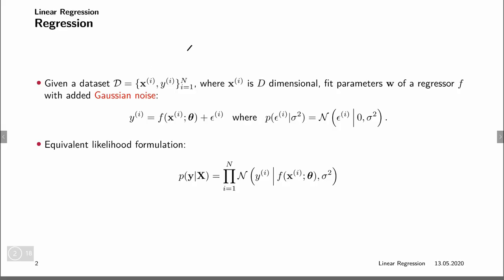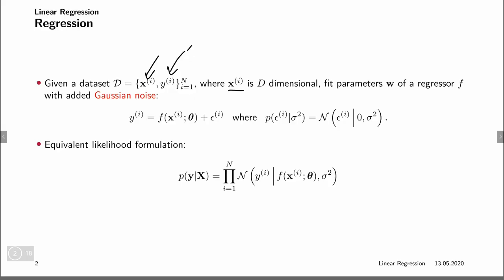We are in the regression setting, which means that we are given a dataset of n points of pairs of input vectors x and output values y. And x is d-dimensional, so it's a vector. We want to fit some parameters of our function — if it's a linear function, these are our weights, but it can really be any function. We're assuming that the yi can be predicted by the function.